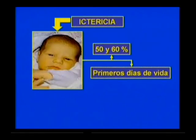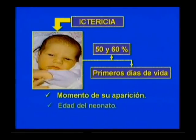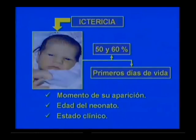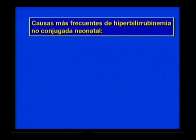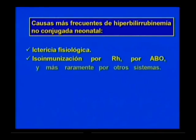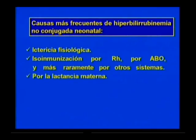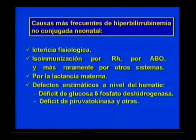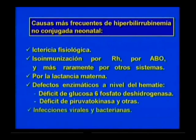Existen elementos importantes que no debes olvidar: el momento de aparición de la ictericia, la edad del neonato y su estado clínico. Dentro de las causas más frecuentes de hiperbilirubinemia no conjugada en el recién nacido se encuentran la ictericia fisiológica, la isoinmunización por RH y ABO, subgrupos de RH y otros sistemas, la lactancia materna, los defectos enzimáticos como el déficit de glucosa-6-fosfato-deshidrogenasa y piruvato-quinasa, además de las infecciones virales y bacterianas.